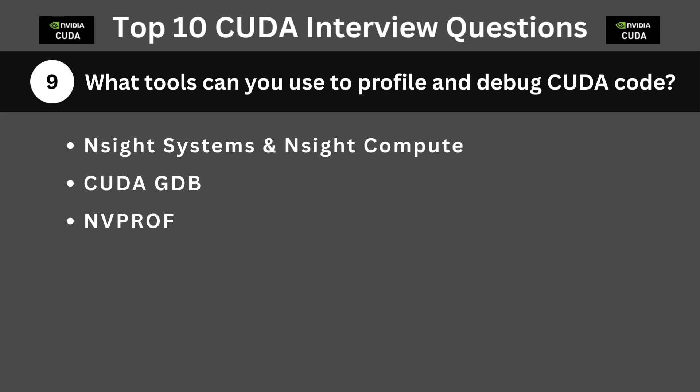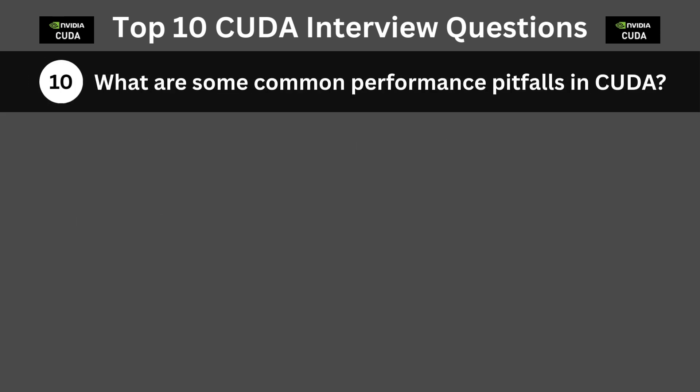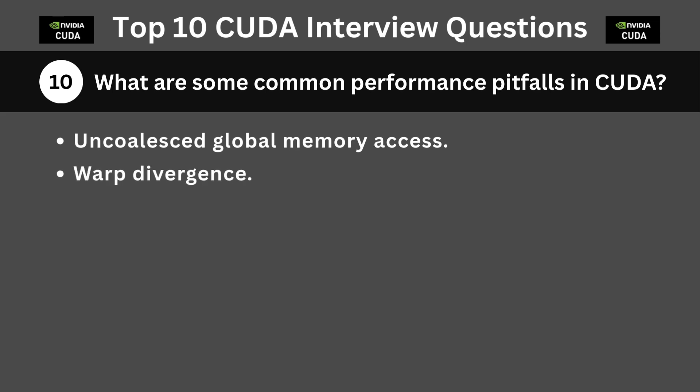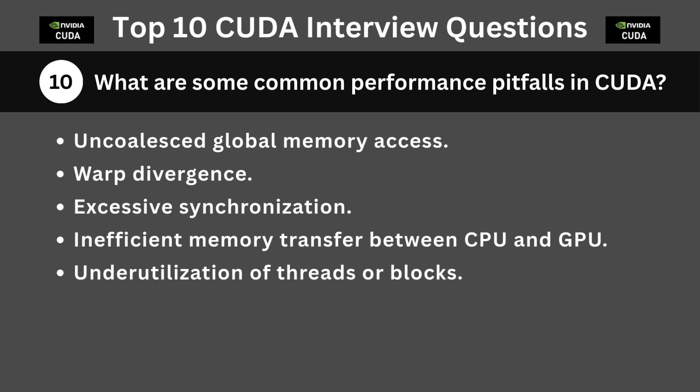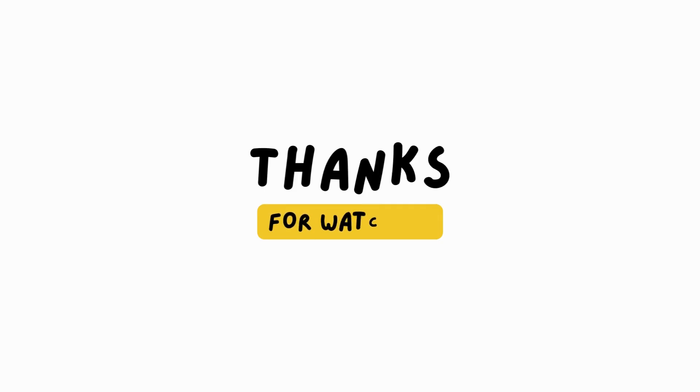The last question is: what are some common performance pitfalls in CUDA? Common pitfalls include uncoalesced global memory access, warp divergence, excessive synchronization, inefficient memory transfer between CPU and GPU, and underutilization of threads or blocks. You can learn more about each of them in the CUDA programming course linked in the video description. Thanks for watching.